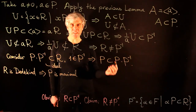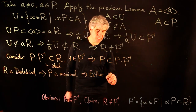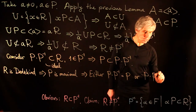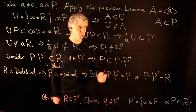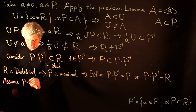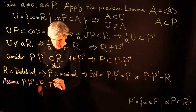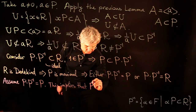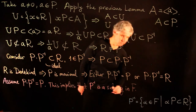Our lemma claims that the second equality holds, so all we have to do is rule out P·P⁻¹ = P. Assume P·P⁻¹ = P and show this leads to a contradiction. This implies P⁻¹ is a subring in F. Indeed, P·(P⁻¹·P⁻¹) = (P·P⁻¹)·P⁻¹ = P·P⁻¹ = P ⊆ R.